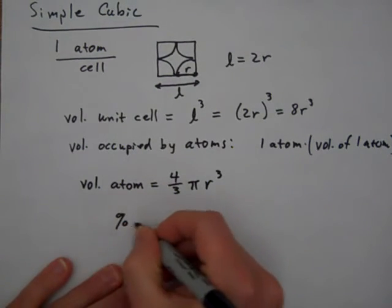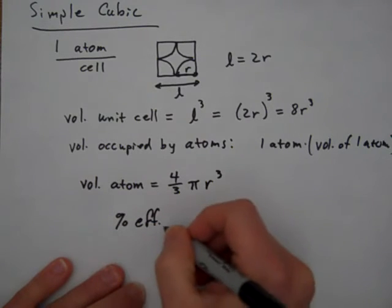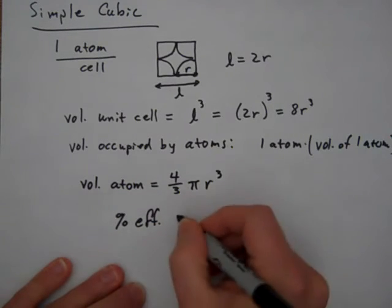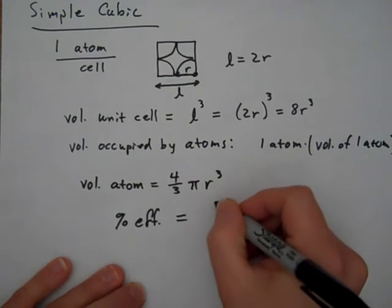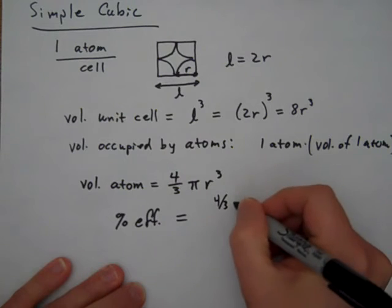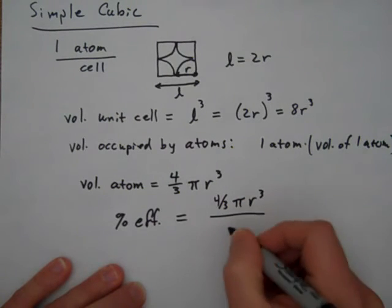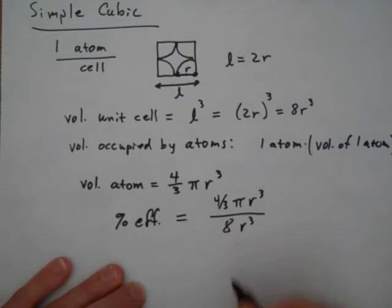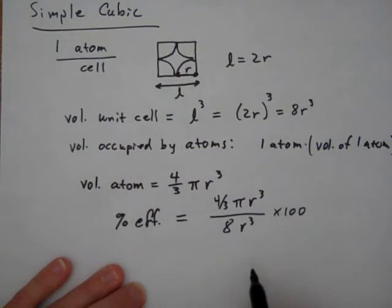So we get that from geometry. So now we can calculate packing efficiency, percent efficiency, like this. So the volume occupied by atoms is four-thirds pi r cubed, divided by 8r cubed, that's the total volume of my unit cell. So remember this is the volume occupied by atoms, divided by the total volume of the unit cell.